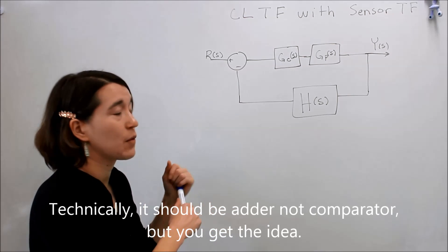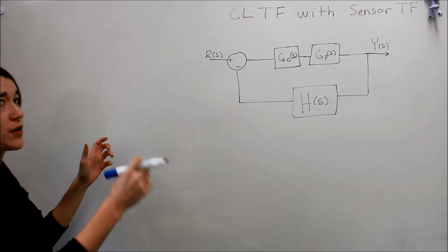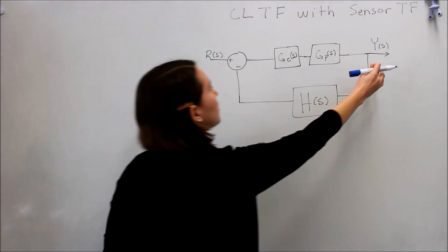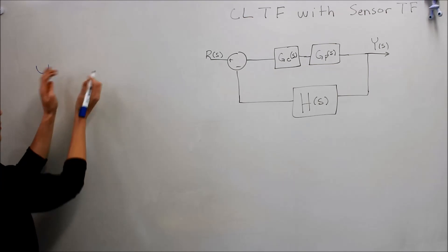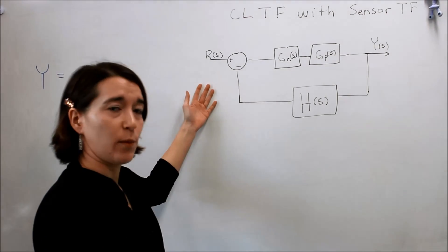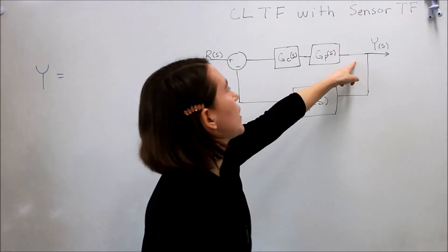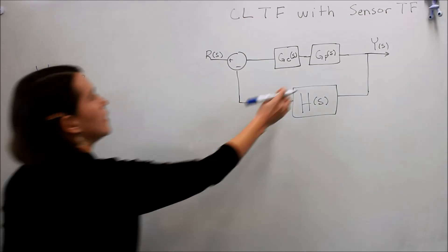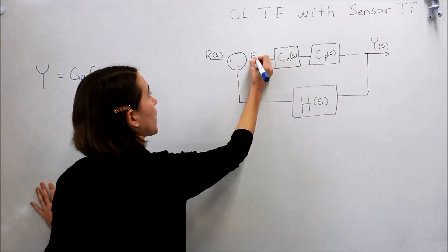First we're going to derive the transfer function for it. We start with writing our basic equation. We can start with y here and I'm going to drop all the parentheses s, so everything is in the Laplace transform. Y here is going to equal, we'll go backwards, so from y it equals gp times gc times this, which is also our error signal.